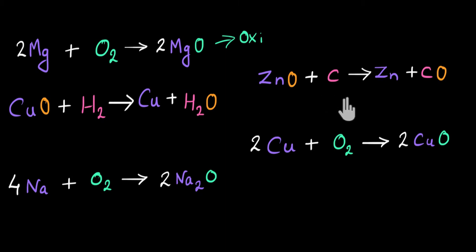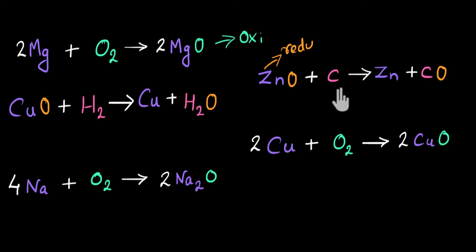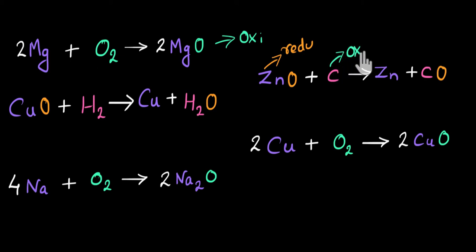In the second example, zinc oxide is reacting with carbon and giving zinc and carbon monoxide. If I focus on zinc, initially it was combined with oxygen, but finally it has lost the oxygen — so zinc is going through a reduction reaction. But in the same reaction, if you focus on carbon, carbon was without oxygen to begin with, but after the reaction it is combined with oxygen, so carbon is going through oxidation. A same reaction can have both oxidation and reduction, and we call such reactions redox reactions — we will talk about this in detail in a separate video.